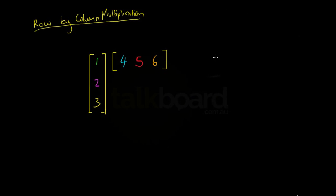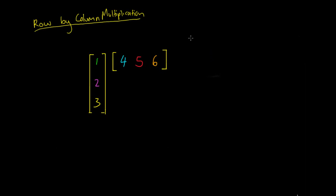Hey guys, so in this video we're going to have a look at multiplying a row matrix by a column matrix. This is one of the easier types of matrix multiplication that we can get, but it's quite a complex process and you'll make a lot of calculation errors if you don't really pay attention when you're doing this sort of stuff.